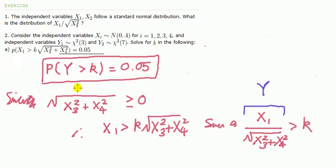What we need to know is the distribution of Y, because once we've got the distribution of Y, we can look up the relevant table. Say Y is along here, bigger than k, k is that point there, and that area in the tail there is 0.05.